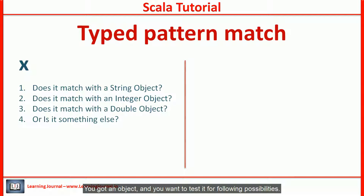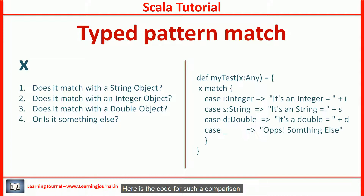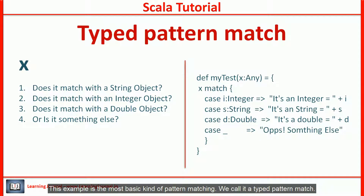You have an object and you want to test it for following possibilities: does it match with a string object, integer object, double object, or something else? Here is the code for such a comparison. This example is the most basic kind of pattern matching — we call it a typed pattern match.